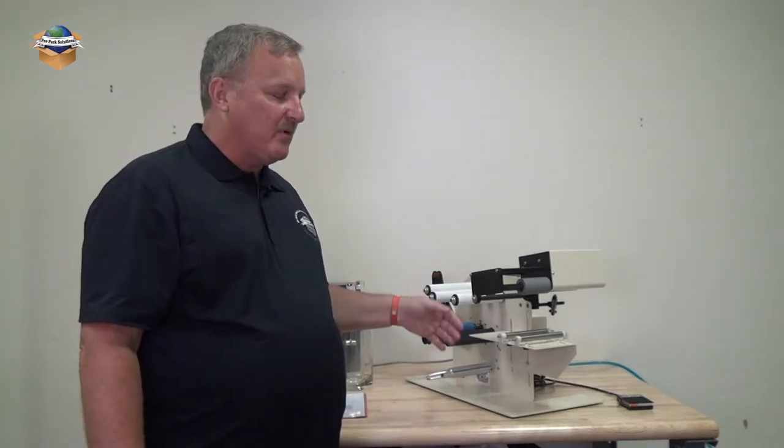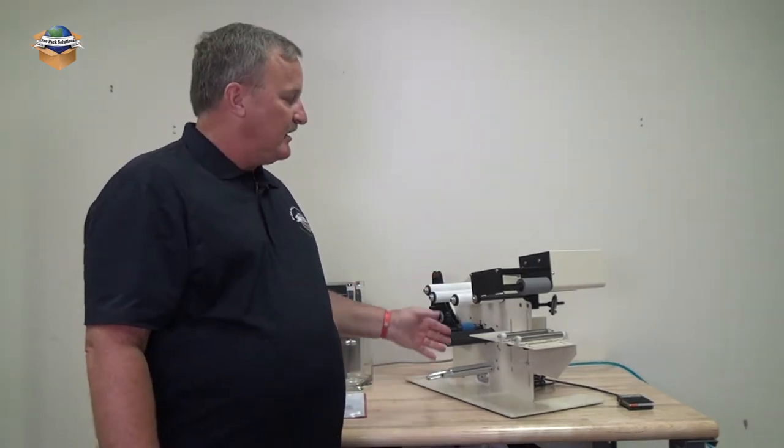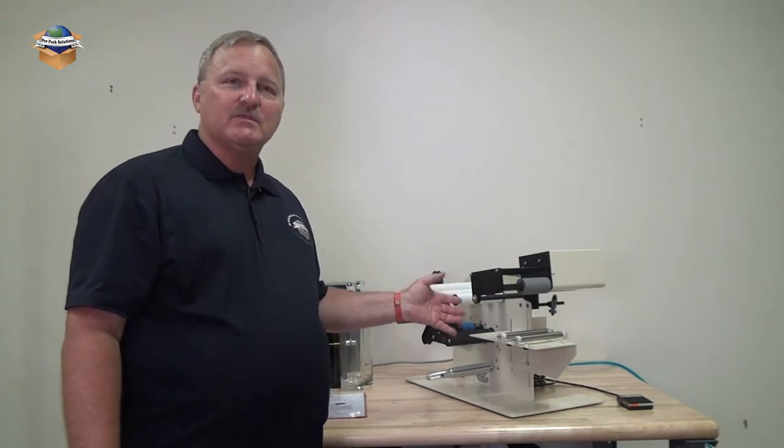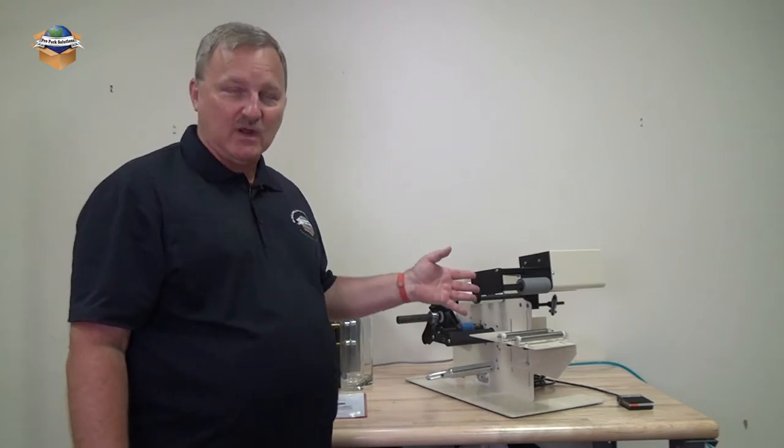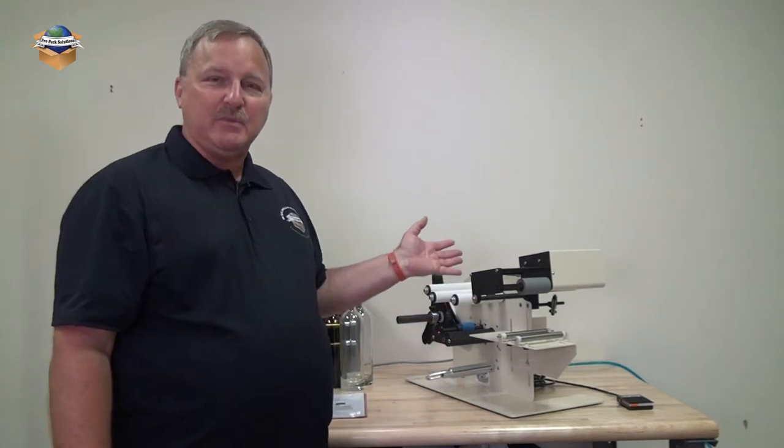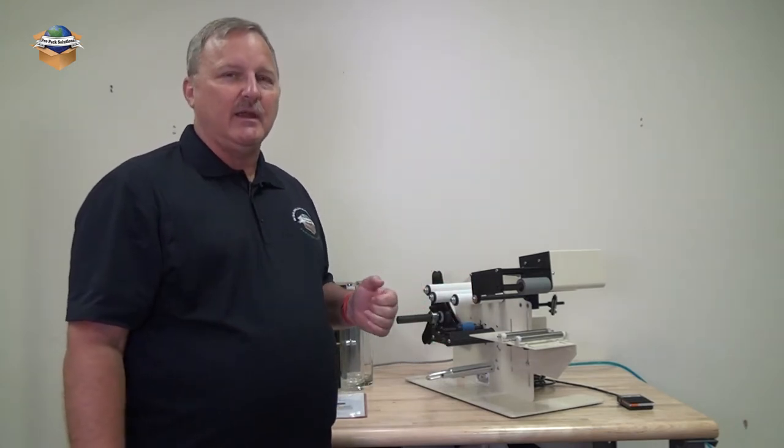The TAL 3100R requires a firm level surface. It also requires a 115 volt 10 amp power supply that's grounded, and for air supply it requires 80 psi of clean dry air.